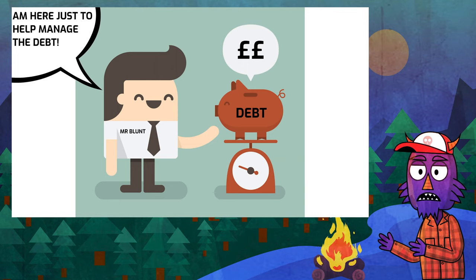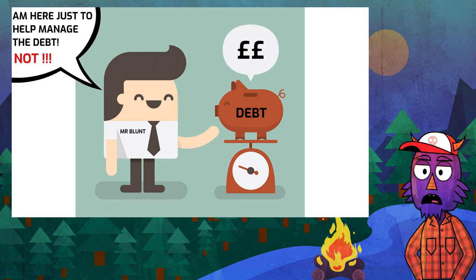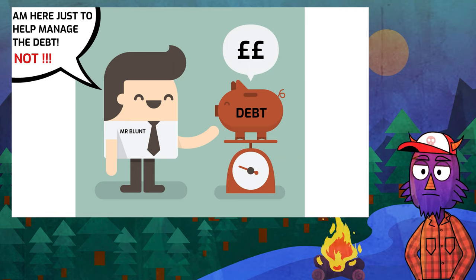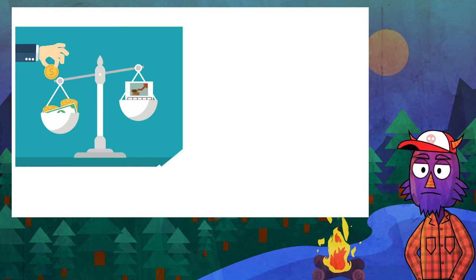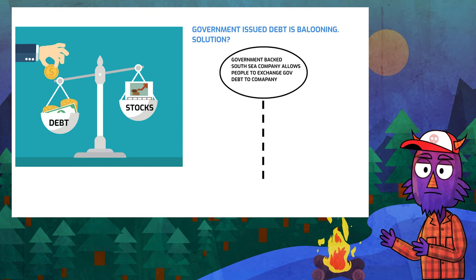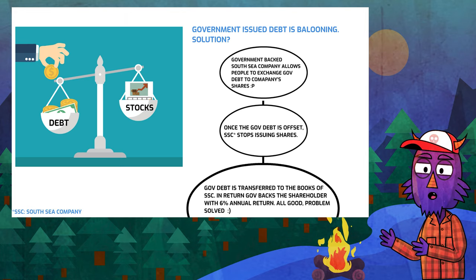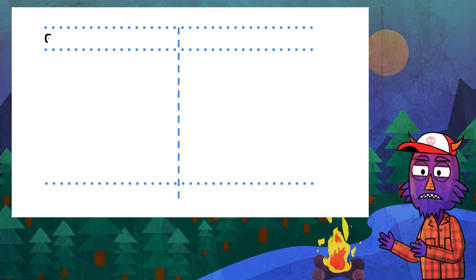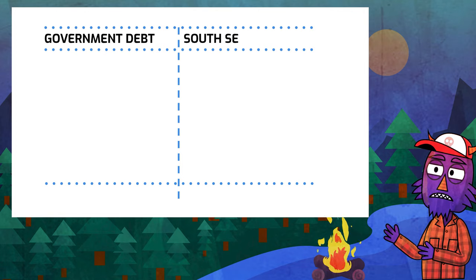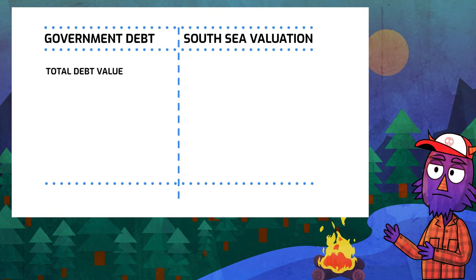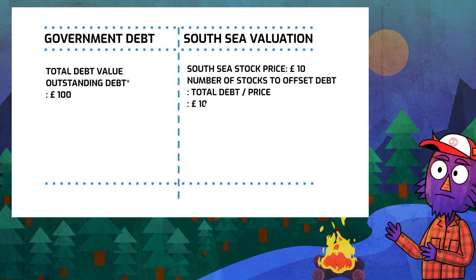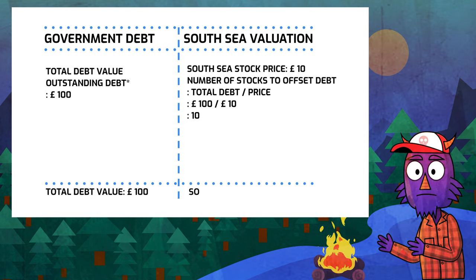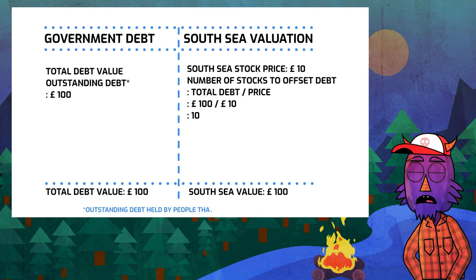But what was the need for Blunt? On paper, the South Sea Company was meant to increase England's influence in South America. But for the government, the sole purpose of the South Sea Company was to manage government debt — meaning the company would issue stock just enough to offset the amount of government debt. For example, if the government held a debt of £100 and the South Sea Company stock was trading at £10, the company was supposed to issue 10 shares, just enough to offset the government debt. Later, if the price of the stock went up, the stockholder could make profit by selling the stock they had already bought.